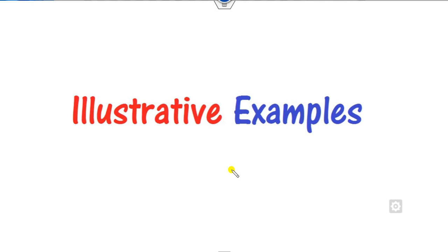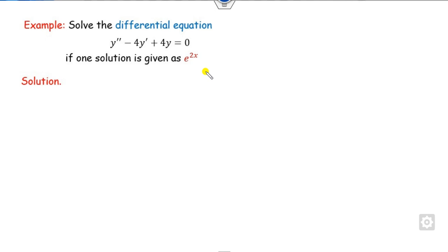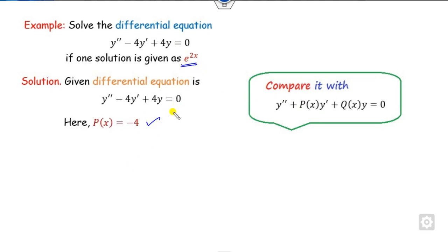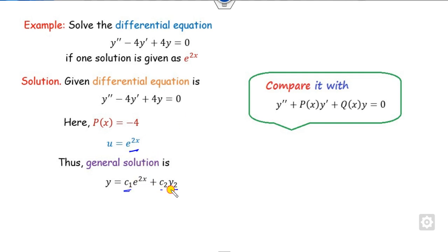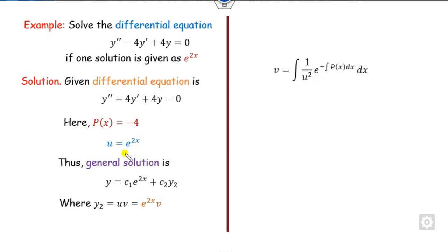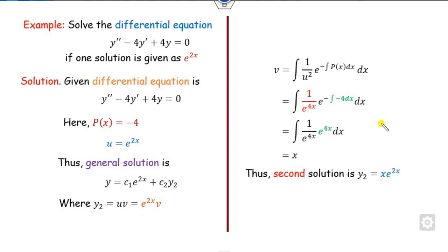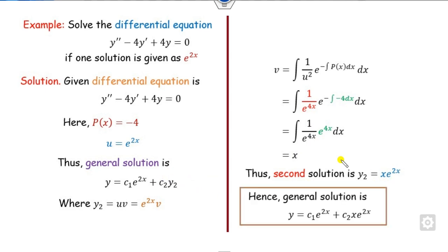How can we implement this in a numerical example? We will see with the help of 5 examples. In the first example, the first solution is given. Comparing the differential equation, the value of p is minus 4 and u is given. The general solution is c1 times the first solution plus c2·y2, where y2 = u·v. Substituting the value of u and p = -4, we get e^(4x), which cancels with the existing e^(4x), so the integration gives x. Therefore y2 is found, and the general solution follows.